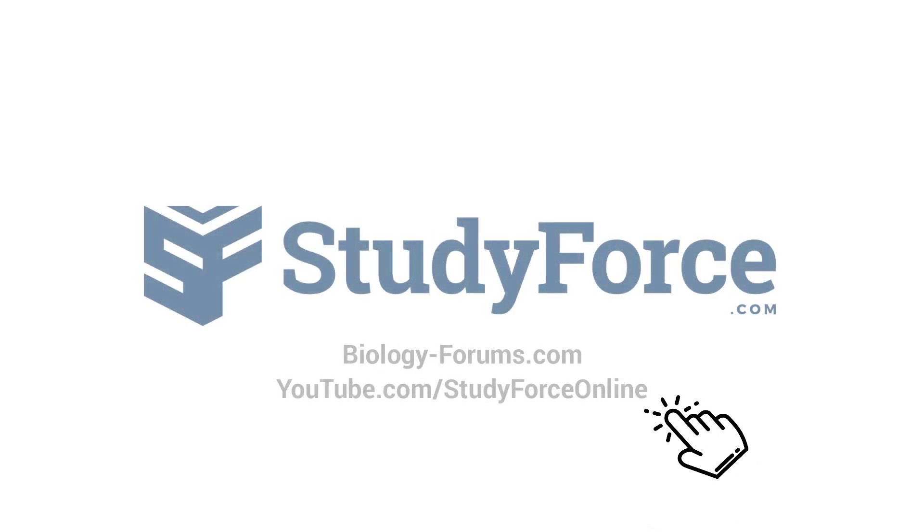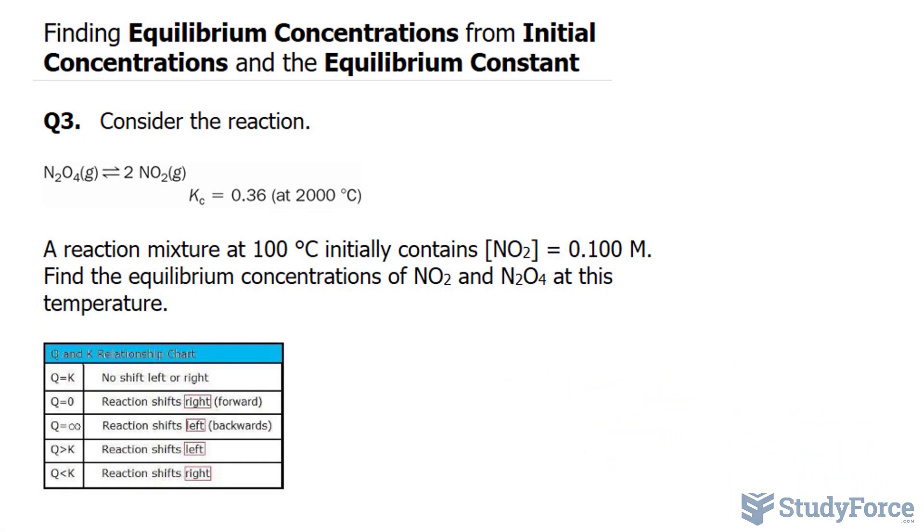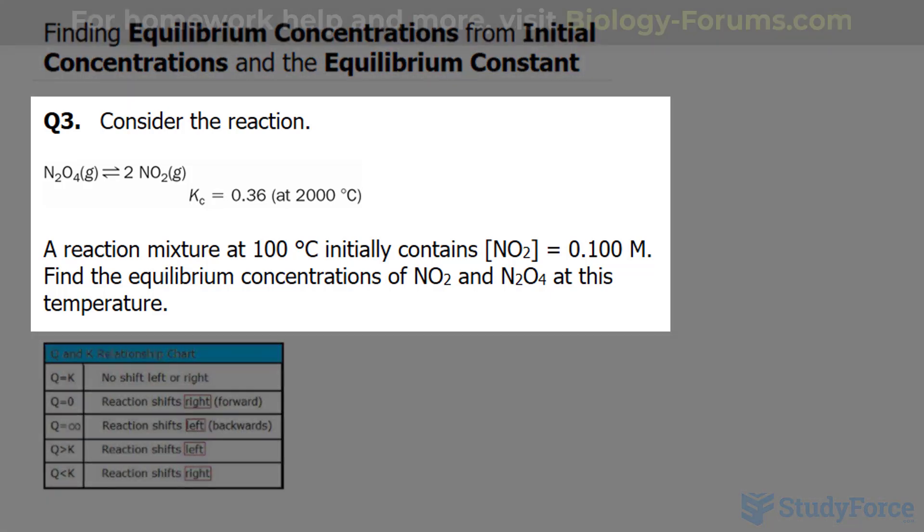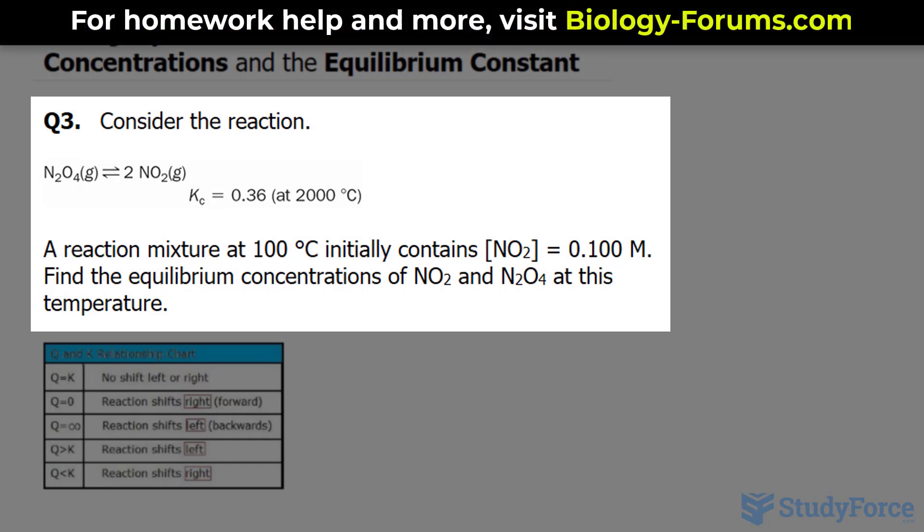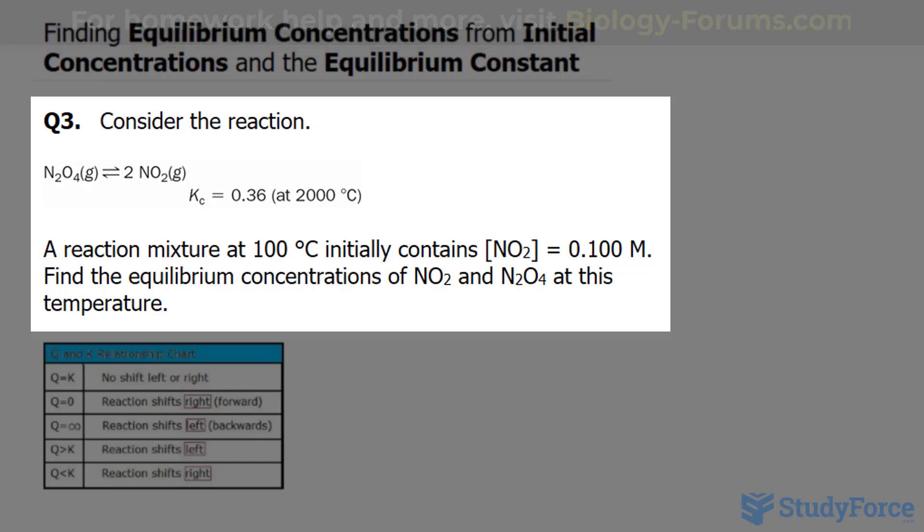Welcome back to question 3 in this series where we find the equilibrium concentrations from initial concentrations and the equilibrium constant. This time the question reads, consider the reaction below. A reaction mixture at 100 degrees Celsius initially contains a concentration of NO2 of 0.100 molar. Find the equilibrium concentrations of NO2 and N2O4 at this temperature.